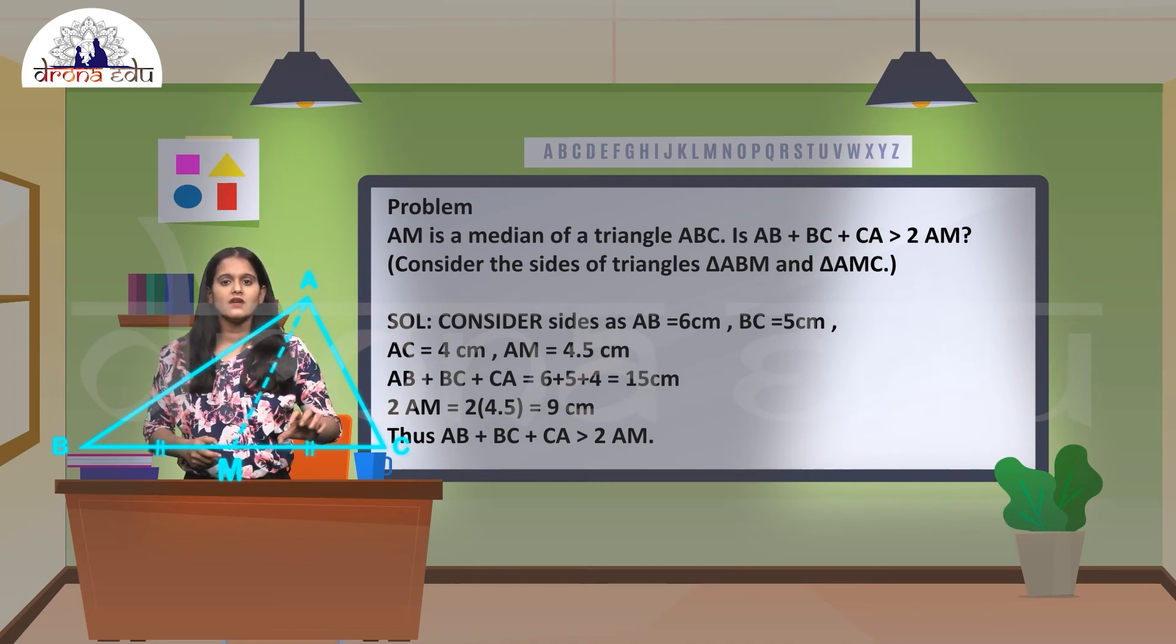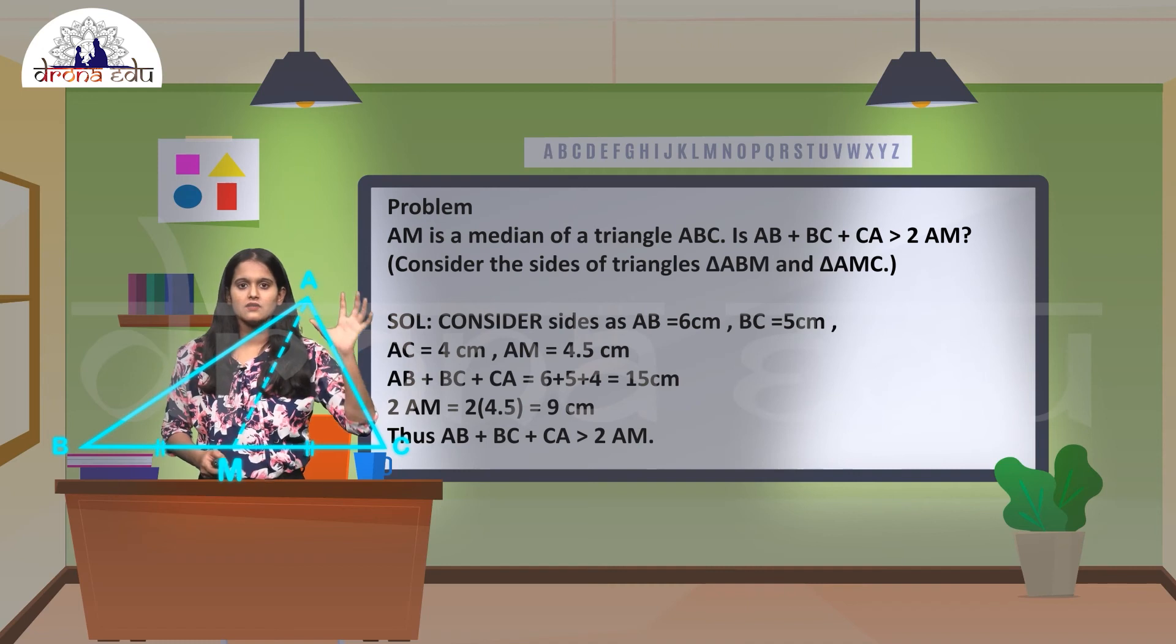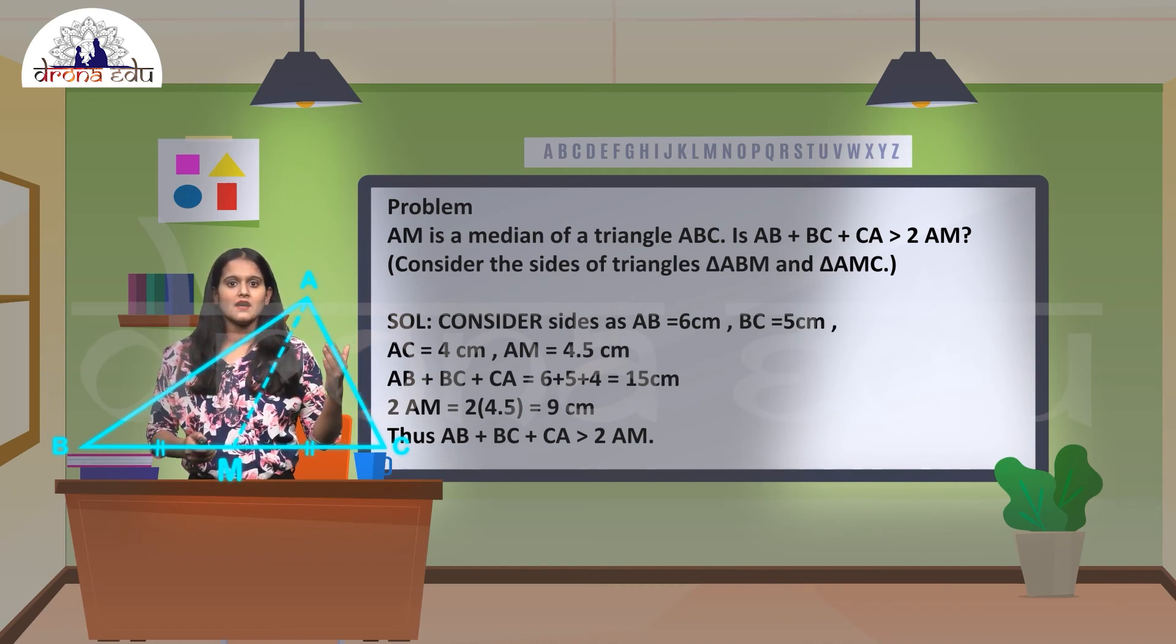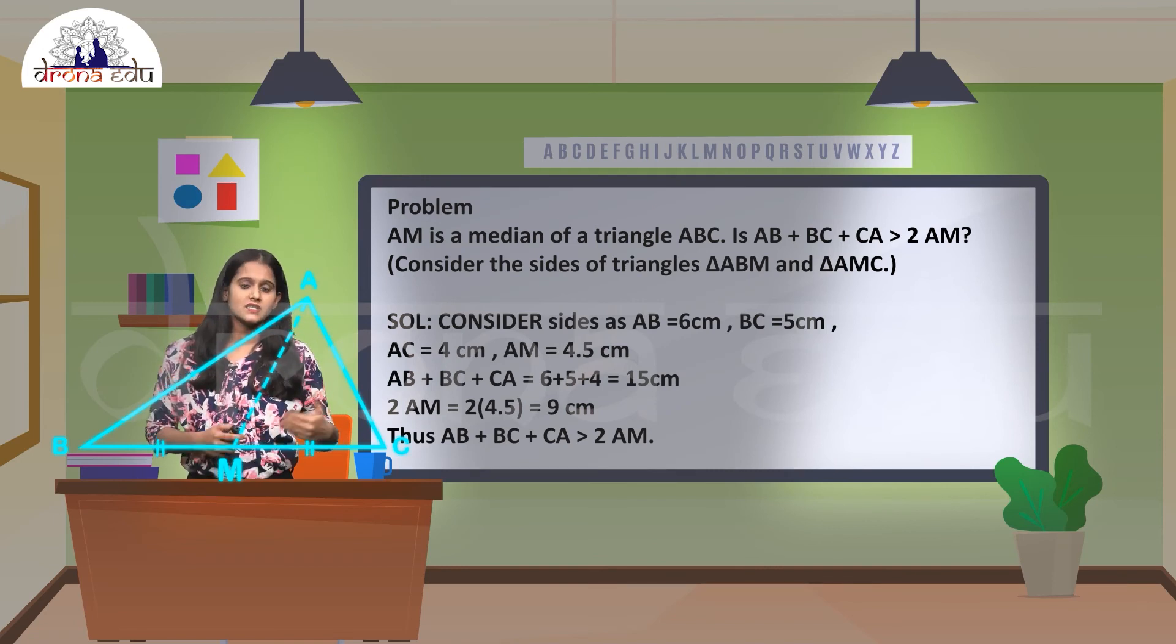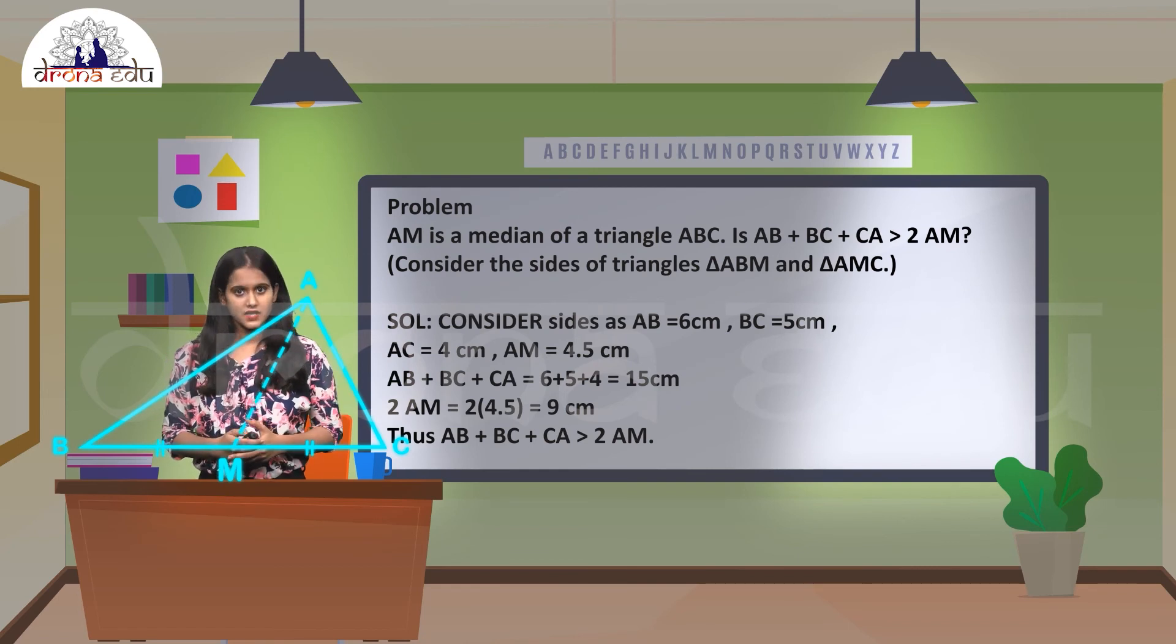I'll take a casual length. For example, if I take a side where AB is 6 cm, BC is 5 cm, and AC is 4 cm.